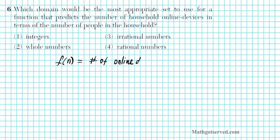The domain is the set of acceptable input values. So the question is, what is the acceptable set of numbers for the domain n — the number of people in the household? We have integers, whole numbers, irrational numbers, and rational numbers. Let's go over examples of each and see which one is an ideal candidate for the domain n.